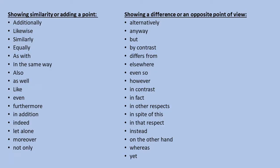Ok, so this is the list. Please make sure you have at least 5 comparative connectives showing similarity and at least 5 showing a difference or opposite point of view written down in your book. There can be any 5 from the list — the most common ones are at the top — but make sure you have 5 from each list before you move on.